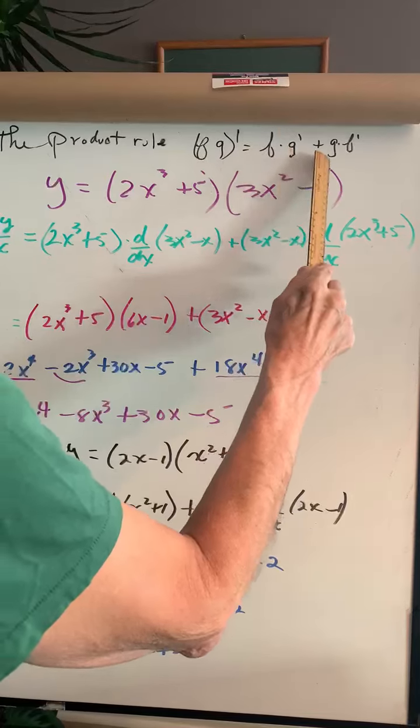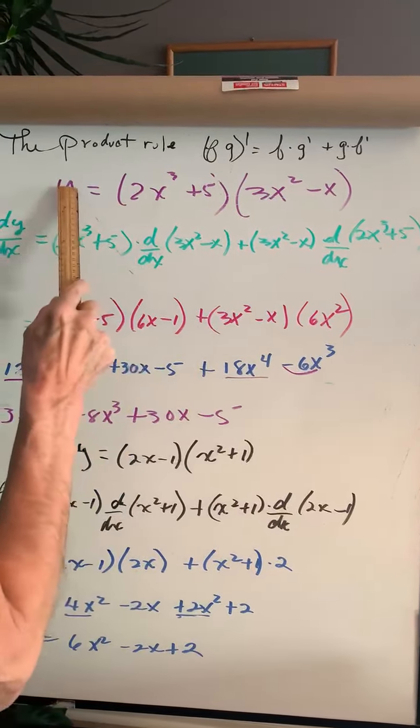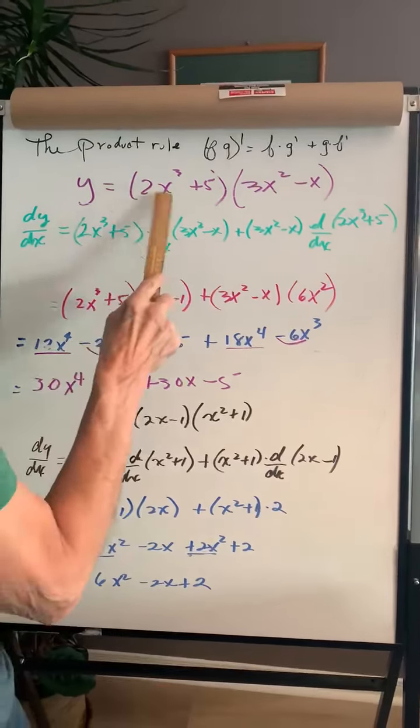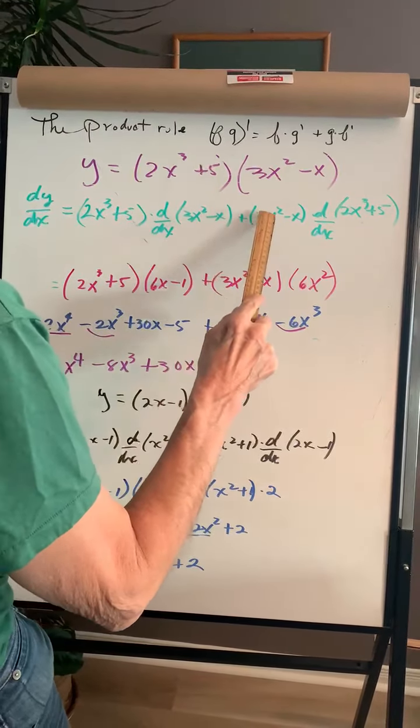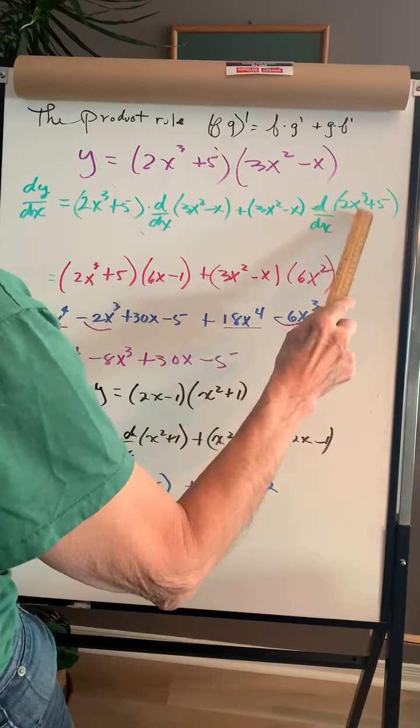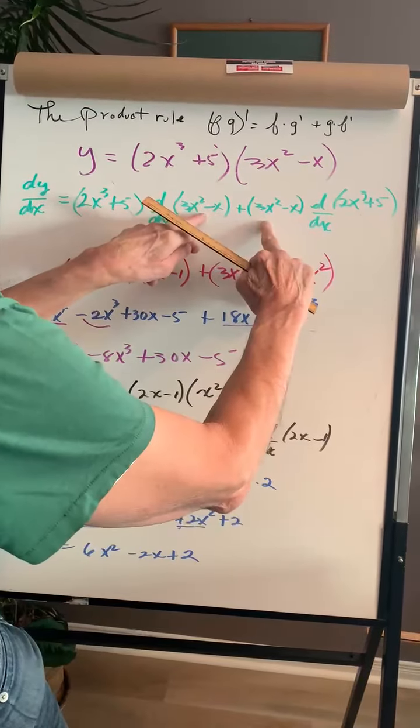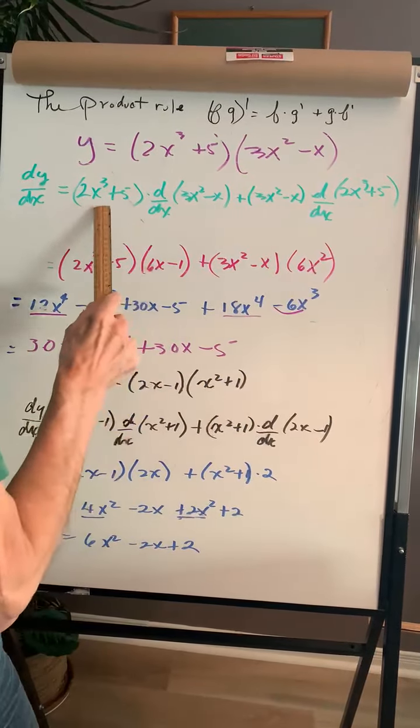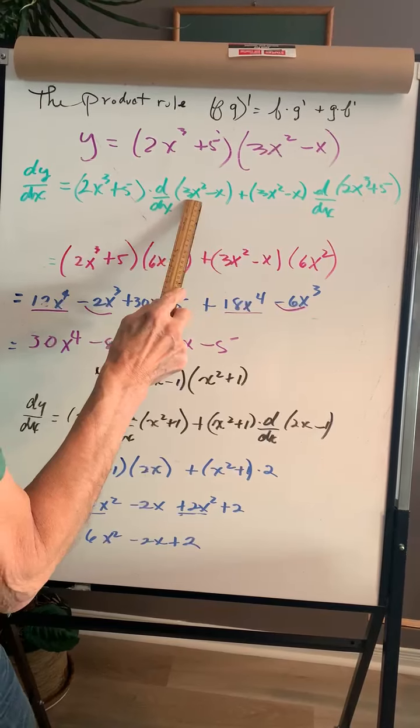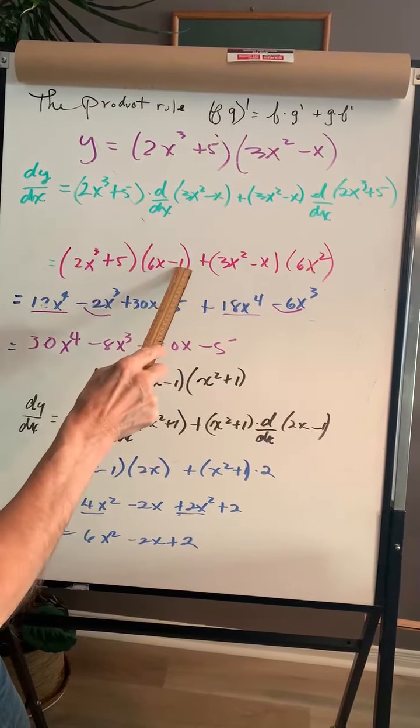So dy by dx is going to be the first times the derivative of the second plus the second times the derivative of the first. Same on the inside, same on the outside. Just cover that up, leave that alone. The derivative of this is 6x minus 1.